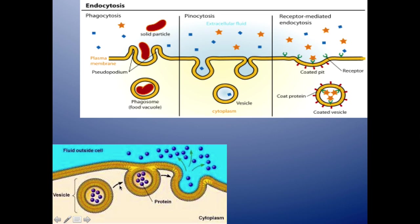Exocytosis is the opposite — material goes out of the cell. A vesicle within the cell moves closer to the membrane, then opens up and releases all of its contents. That is exocytosis — exiting the cell.